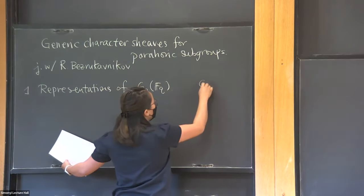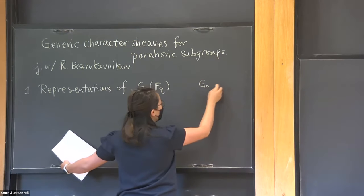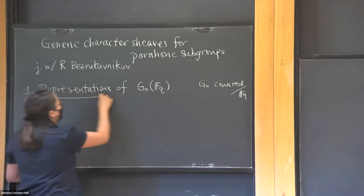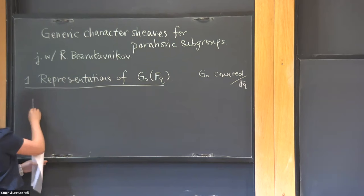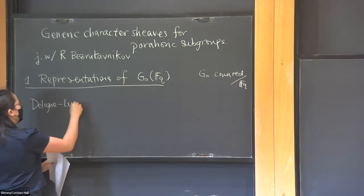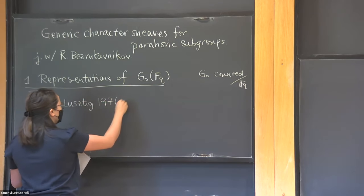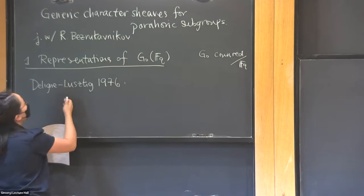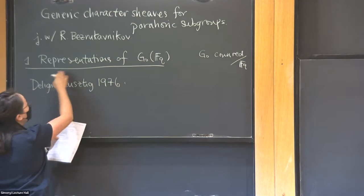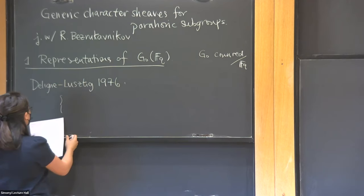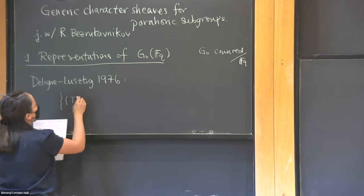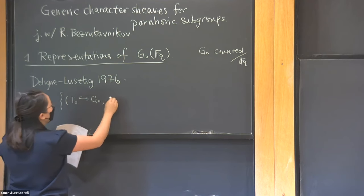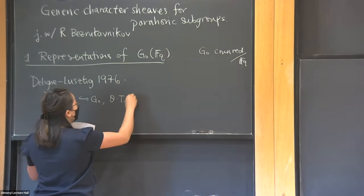So this G-naught here — I'll be clear later why this is called G-naught — is a connected reductive group over F_q. What Deligne and Lusztig established in their paper of 1976 is a pretty good understanding of what these representations look like. The way they did it is: you take your G-naught and consider pairs consisting of a maximal torus inside G-naught together with a character of this maximal torus.